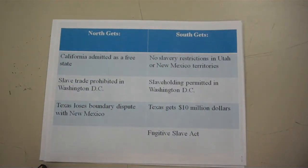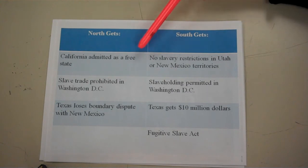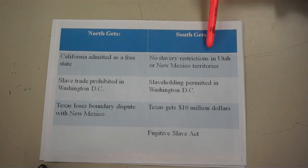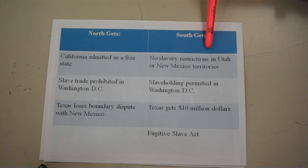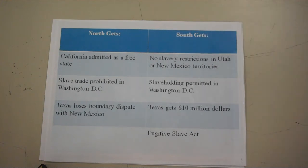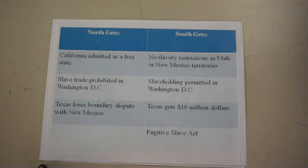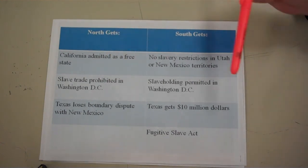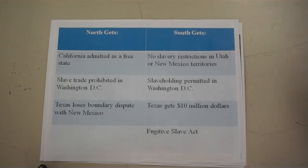The Compromise of 1850 would admit California as a free state and place no restrictions on slavery in the remaining Utah and New Mexico territories, giving these territories popular sovereignty — the right of the people to decide through voting. Also, the slave trade would be abolished in Washington, D.C., but those with slaves within D.C. would be allowed to keep them.